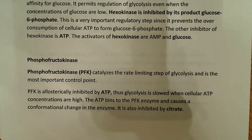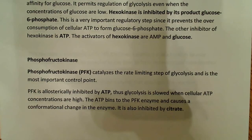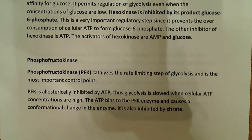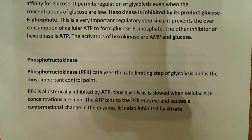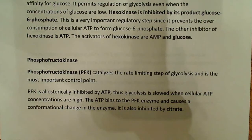The next enzyme is phosphofructokinase, or PFK1. It catalyzes the rate-limiting step in glycolysis, making it an extremely important control point. Once fructose-1,6-bisphosphate is made, you have to go through the rest of glycolysis—you have no other option. You want to control how much energy the cell has, because life requires a delicate balance. We don't want to be using energy to go through metabolic processes we don't need.